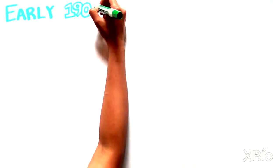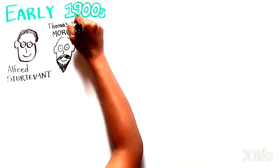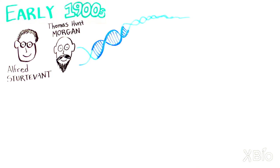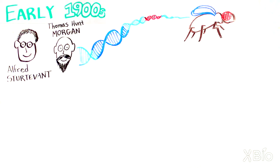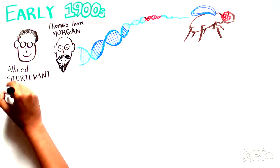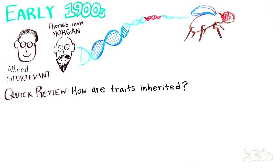Back in the early 1900s, two scientists named Alfred Sturtevant and Thomas Hunt Morgan made the first map of genes in the fruit fly Drosophila. But before we get into Morgan and Sturtevant's research and its implications, let's quickly review what was known at the time about how traits are inherited.